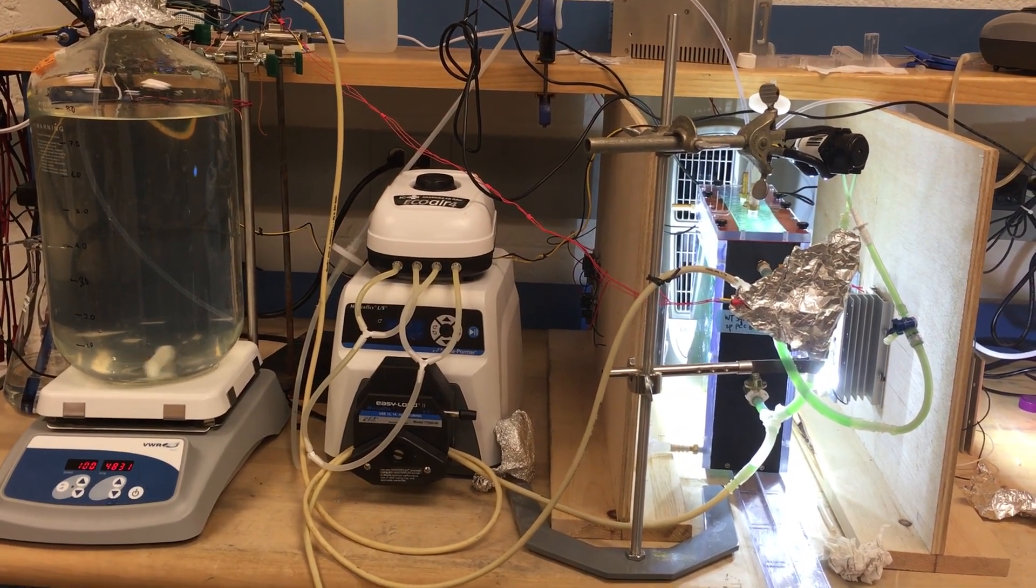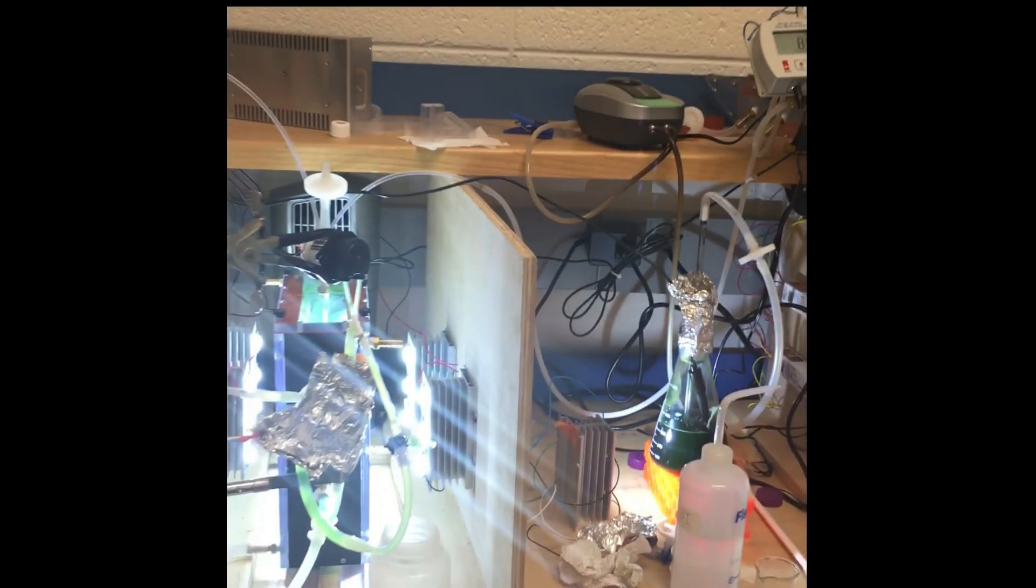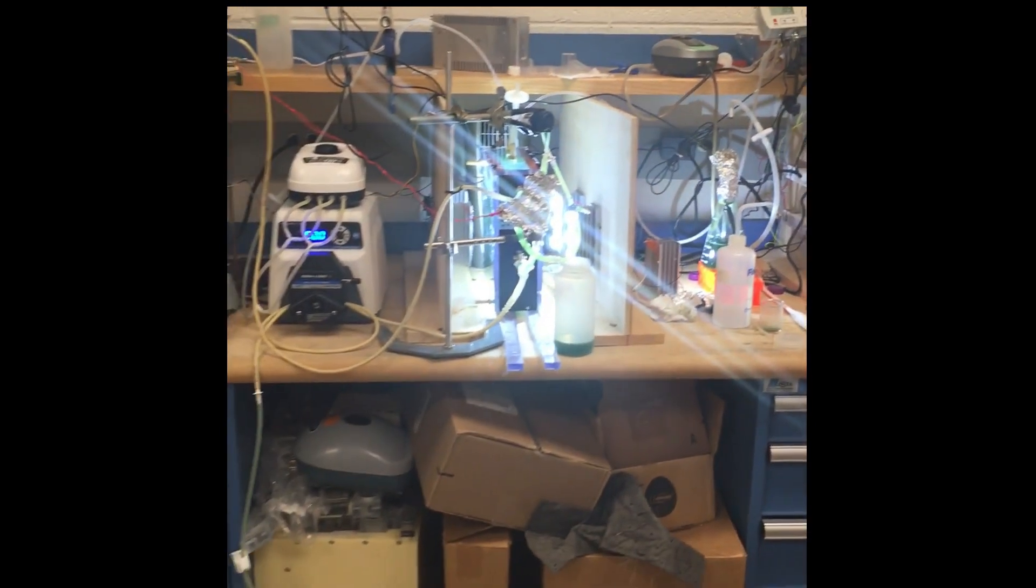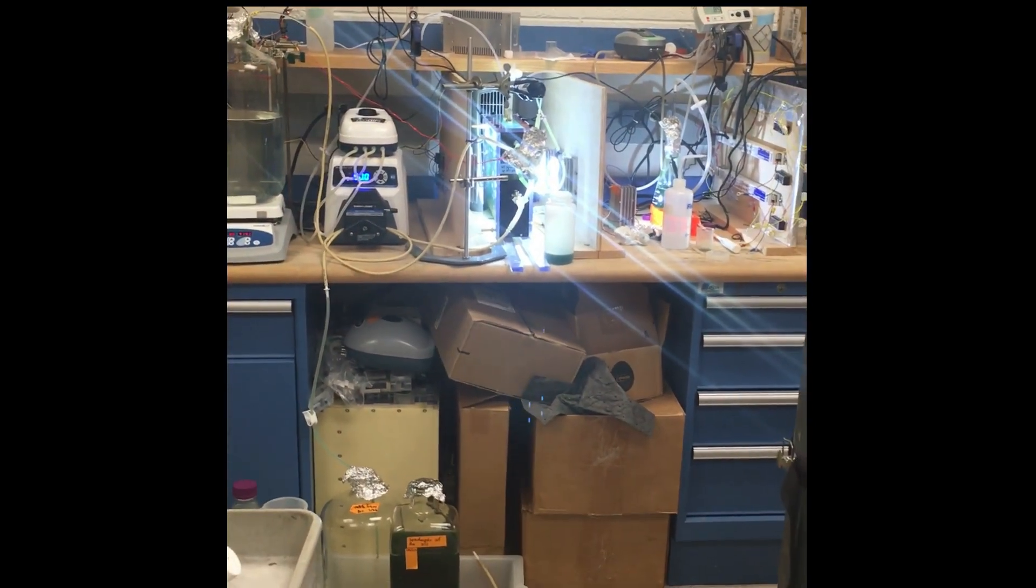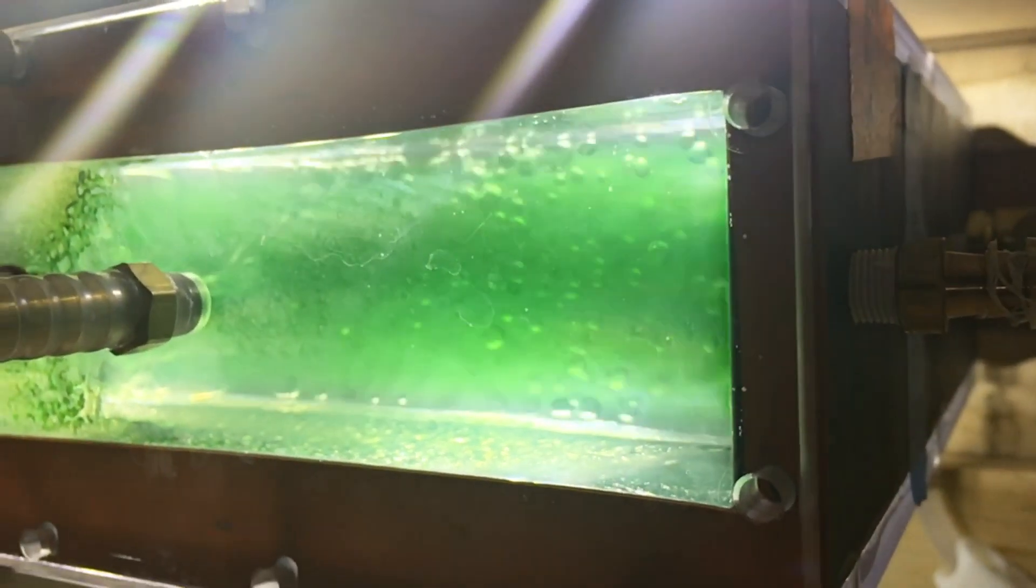So this reactor has a pH controlled by automatic addition of CO2. The key feature of this system is to monitor and control biomass densities by a turbidity sensor and an Arduino box.